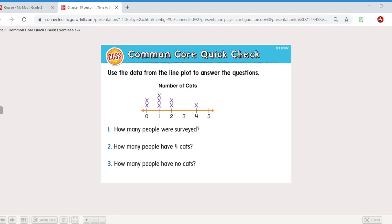And the x means how many people have that cat. So two people have no cats. One person has three cats. Two people have two cats. Nobody has three. One person has four and nobody has five. Wow, that'd be a lot to have five cats. So we need to find out how many people were surveyed. Remember the x's on a line plot tell you how many people were asked.